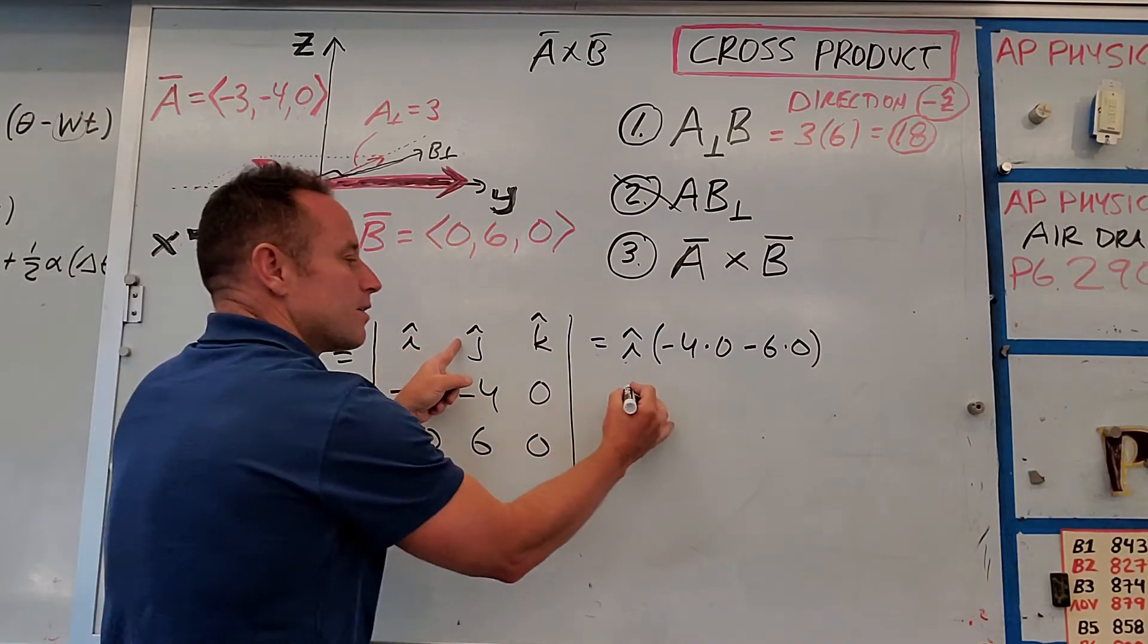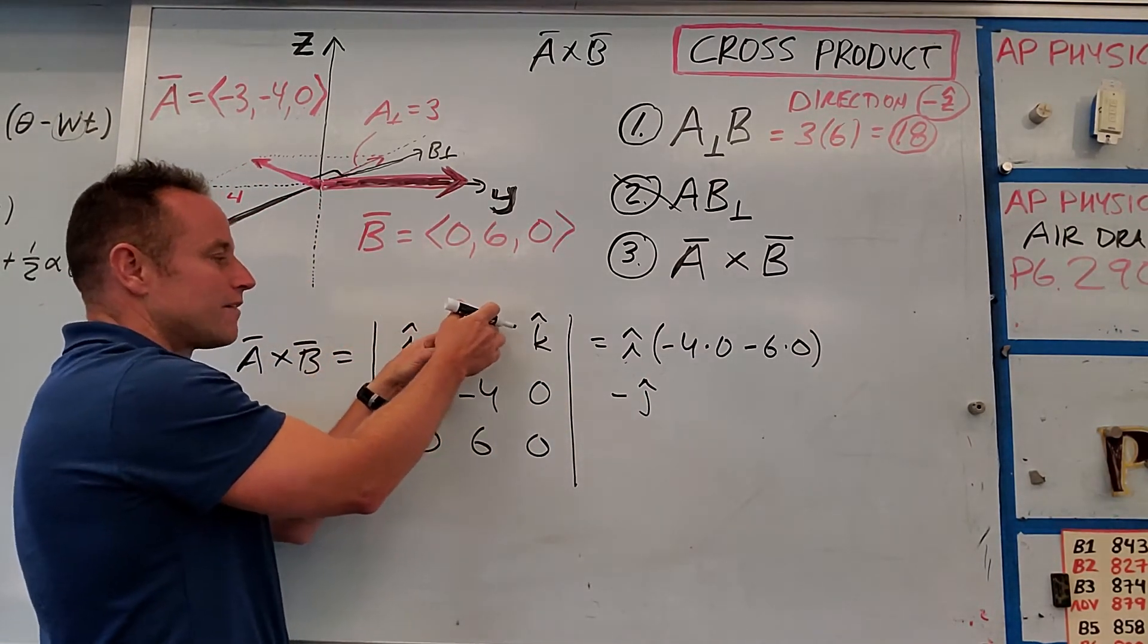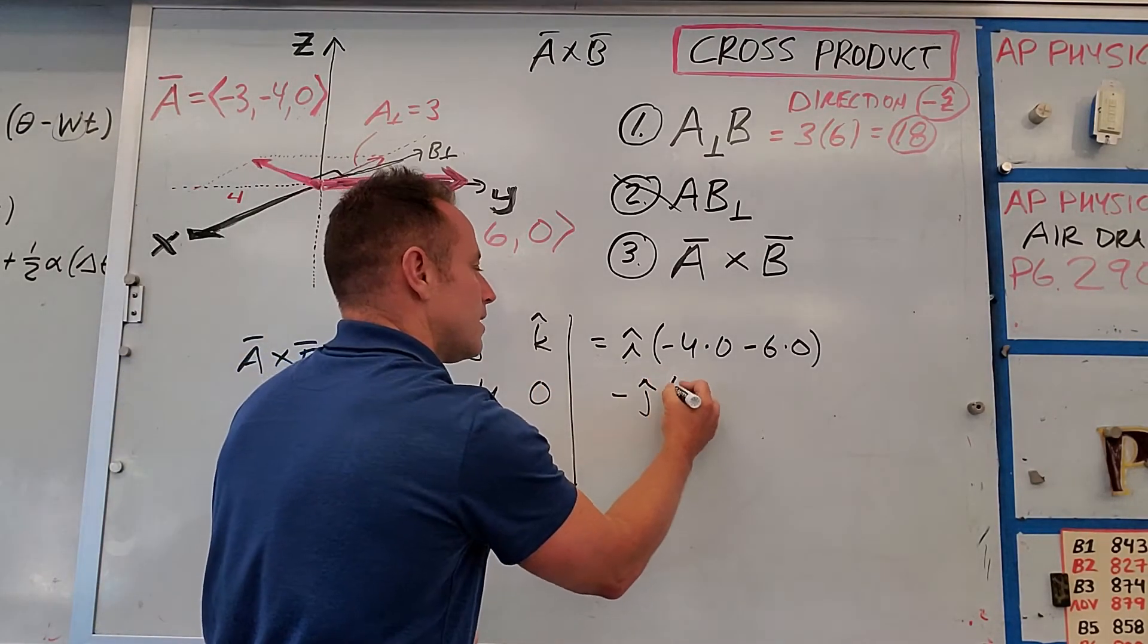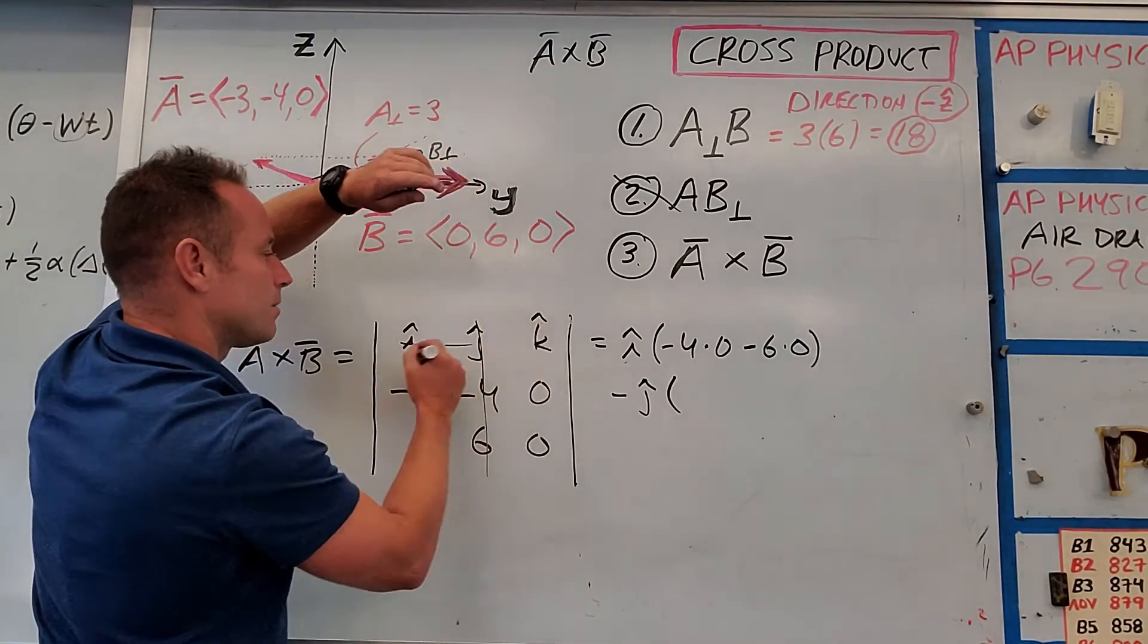Then you move to J hat. You're going to remember to oscillate signs. So you start positive here, you start negative here, negative J hat. Cover up the row and the column. So forget about that row or that column and that row.